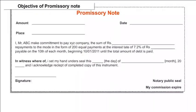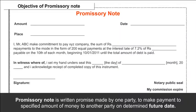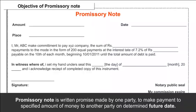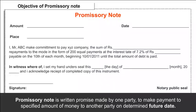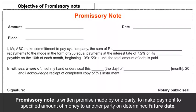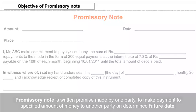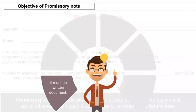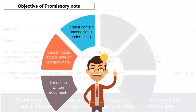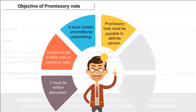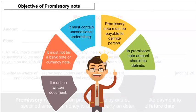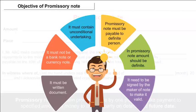Objectives of Promissory Note: A promissory note is a written promise made by one party to pay a specified amount of money to another party on a determined future date. To be valid, it must be a written document, must not be a bank note or currency note, must contain an unconditional undertaking, must be payable to a definite person, the amount must be definite, and it must be signed by the maker.